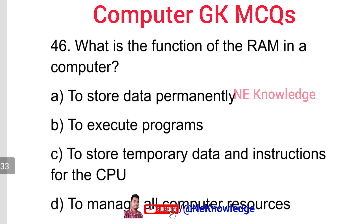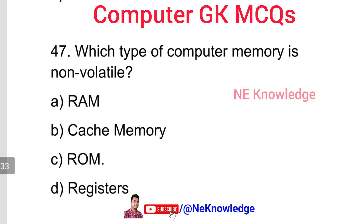Question number 46: What is the function of RAM in a computer? RAM stands for Random Access Memory. It is a volatile memory — when power is off, data is lost. The function of RAM is to temporarily store data and instructions for the CPU. Option B is the correct answer.